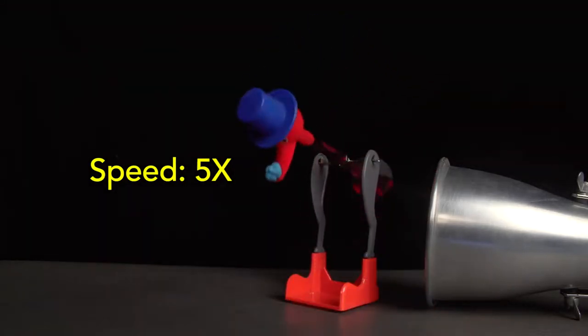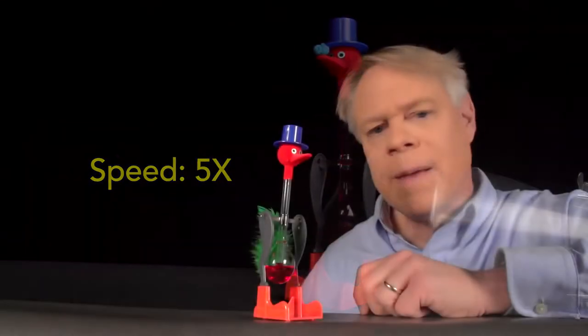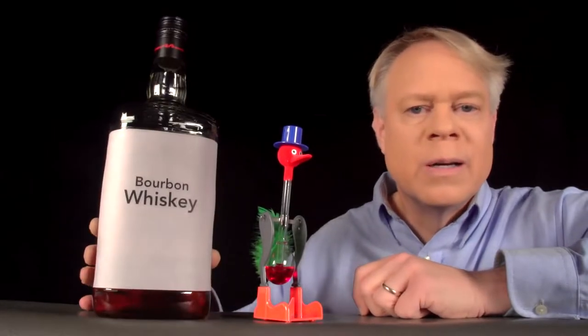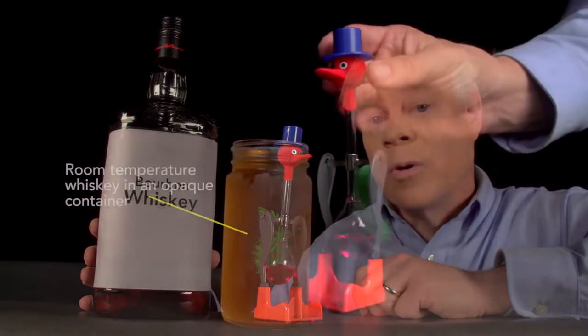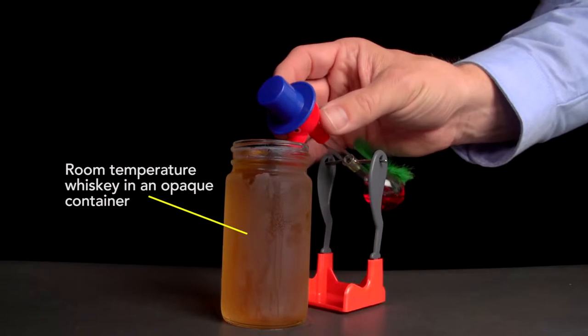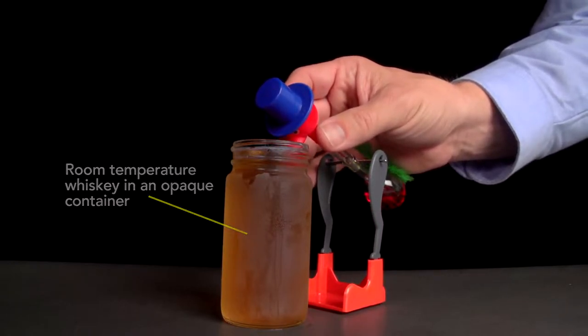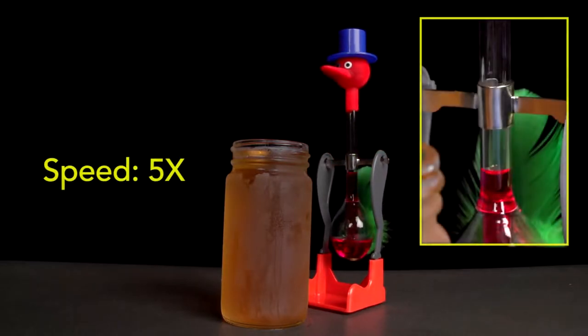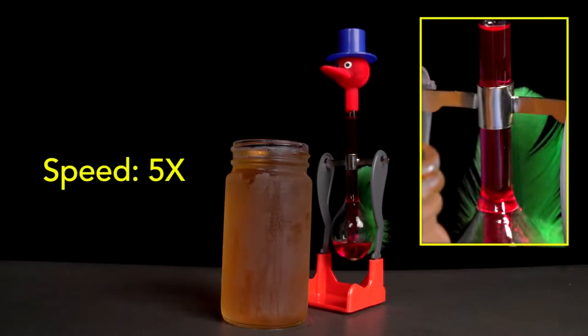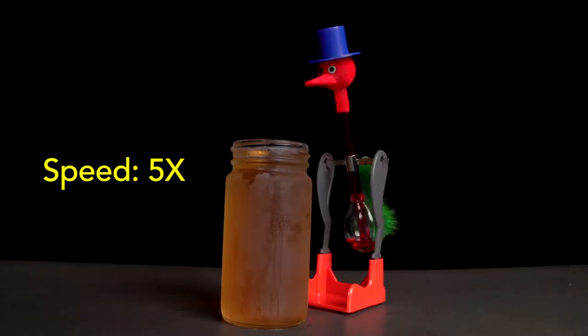The bird drinks for a little bit longer until eventually it comes to rest. Next, let's see what happens if we use this whiskey. Again, thoroughly wet the bird's beak with the liquid, stand it upright, and then we see again the liquid rising in the bird. And then it drinks.